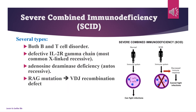Severe combined immunodeficiency is both a B and T cell disorder. It has several types: defective IL-2R gamma chain, the most common, which is X-linked recessive; adenosine deaminase deficiency, which is autosomal recessive; and RAG mutation leading to VDJ recombination defect.